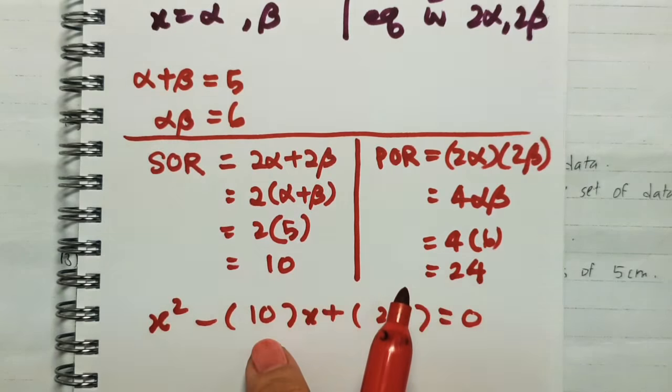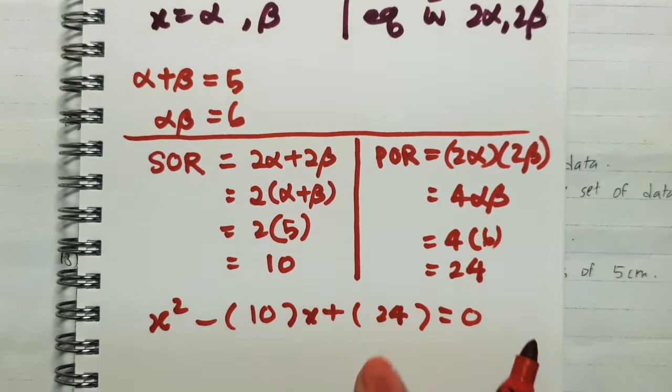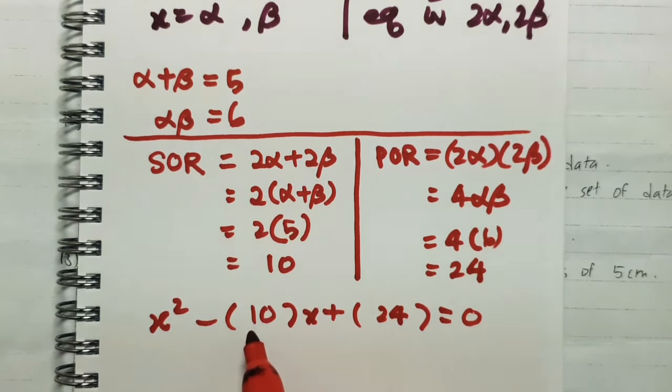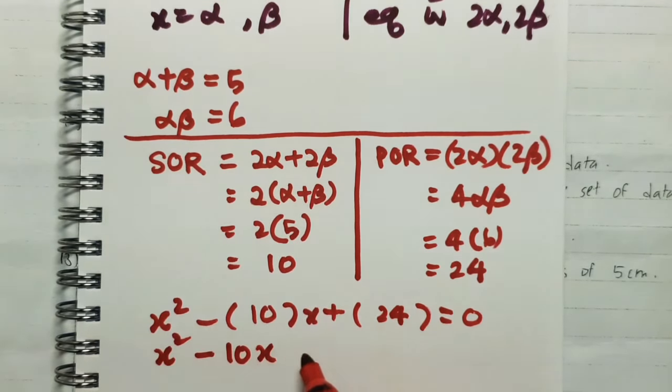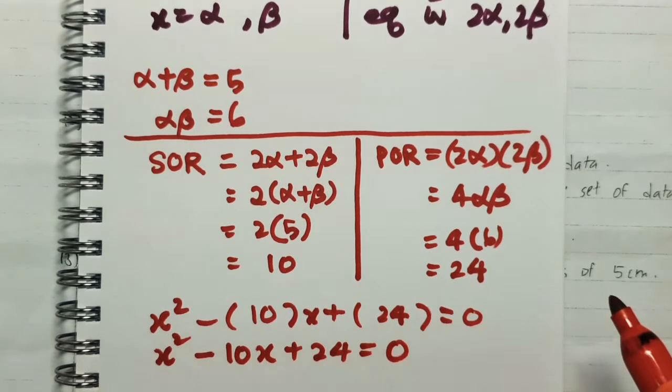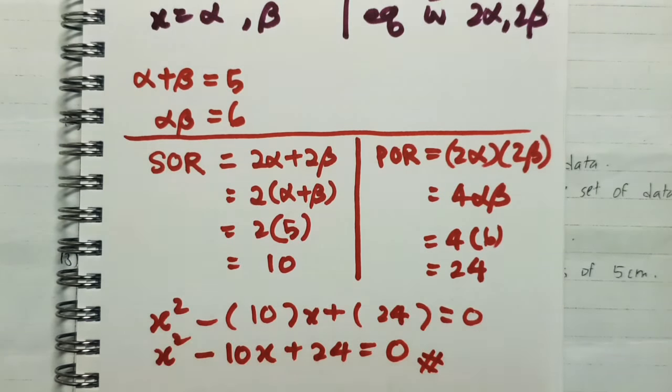Then every time, I just replace whatever sum of roots or product of roots I've found. So I don't have to worry about whether it's negative or positive. After we've keyed in the correct numbers, we get x² - 10x + 24 = 0. We've found the answer for question 10.